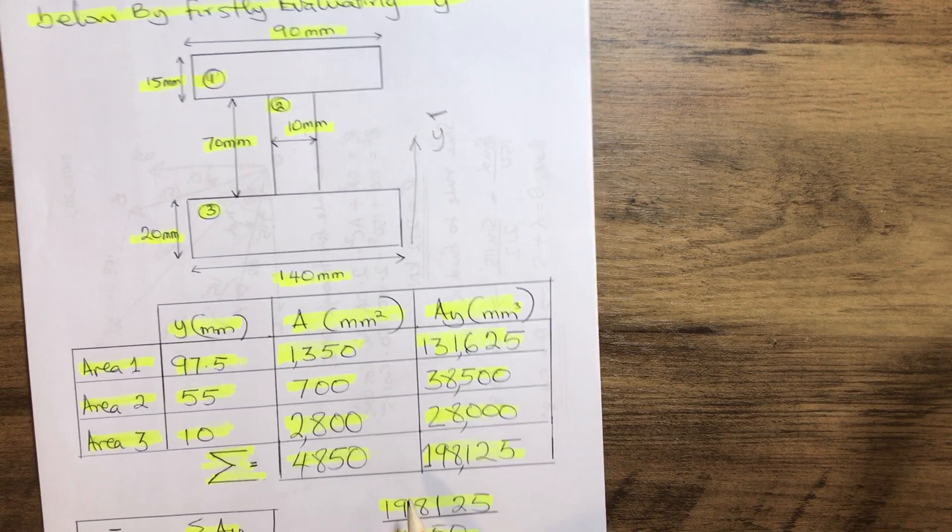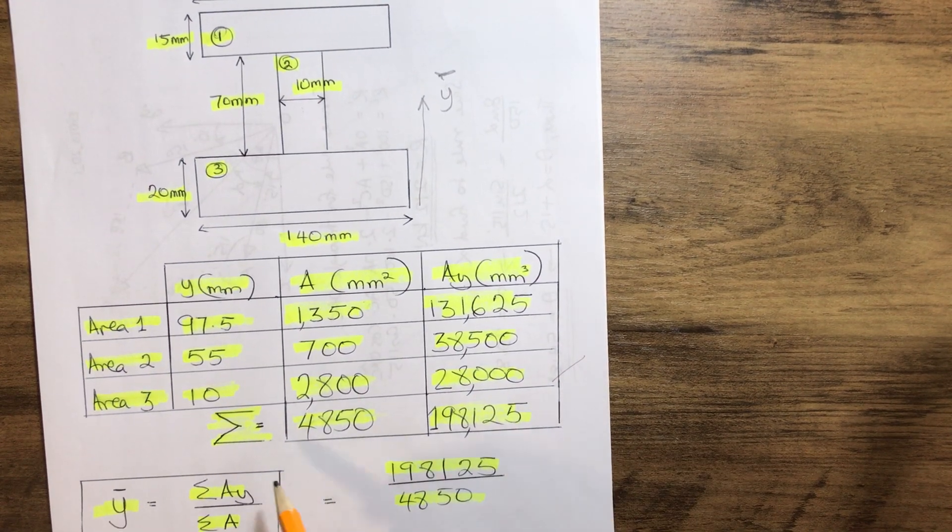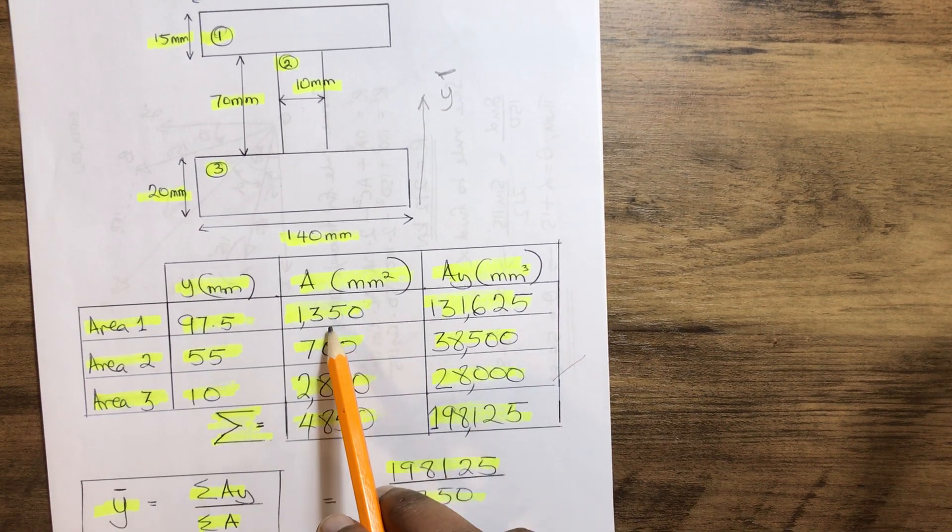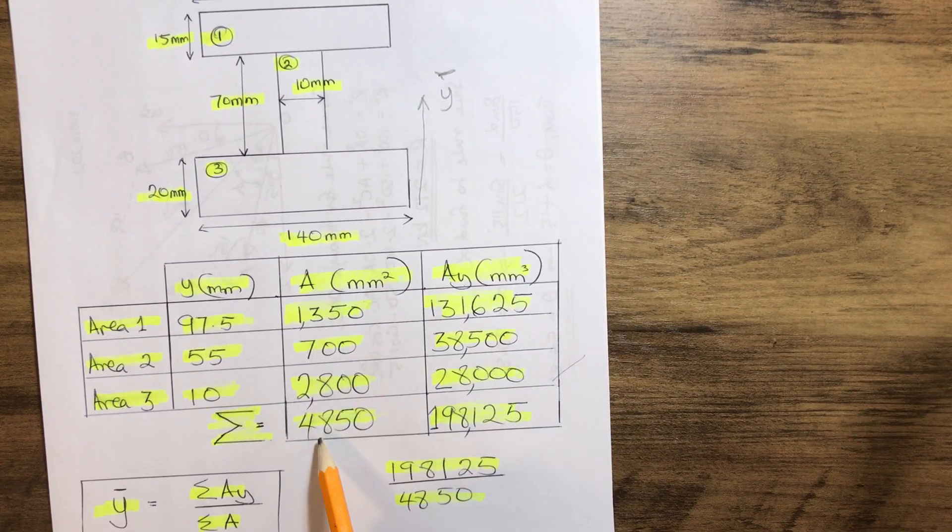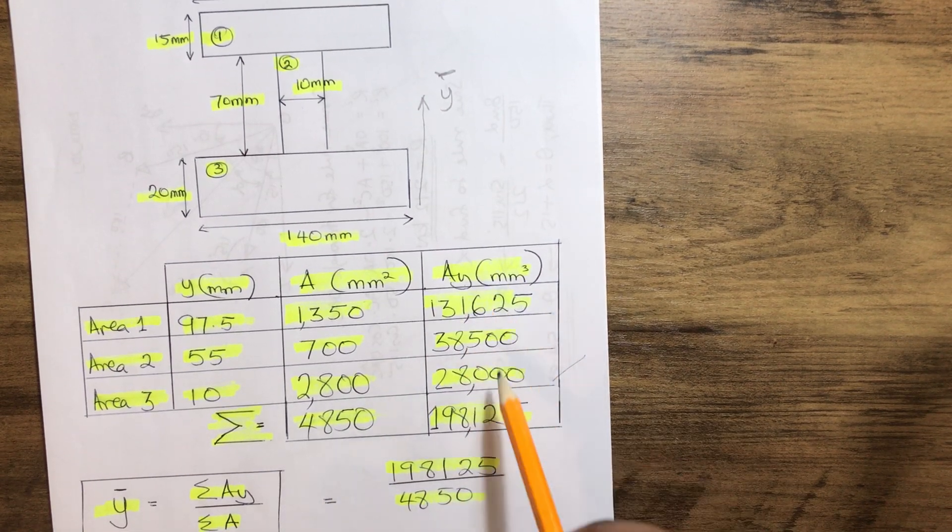That one is done. So the next thing is to add the summation of all the columns. The summation of the area column gives us 4850. The summation of the AY column gives us 198,125.